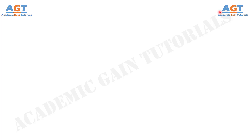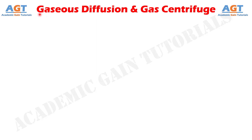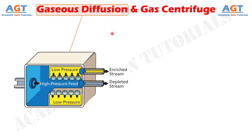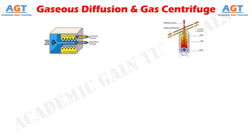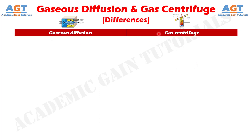Welcome to Academic Game Tutorials. In this video, we will look into the differences between gaseous diffusion and gas centrifuge techniques. The working principle of both processes is based on the slight mass difference between uranium-235 and uranium-238 isotopes. Gaseous diffusion produces enriched uranium by forcing gaseous uranium hexafluoride through semi-permeable membranes, while gas centrifuge separates isotopes as gases based on their slight difference in mass. Let's look at these differences in tabular form.